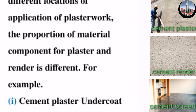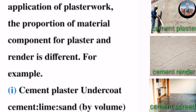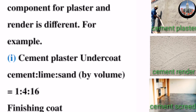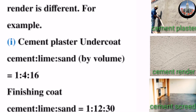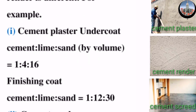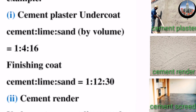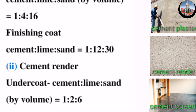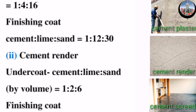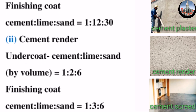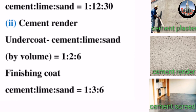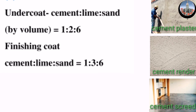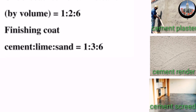For example: (1) Cement plaster — undercoat (cement:lime:sand by volume): 1:4:16 sand; finishing coat (cement:lime:sand): 1:2:30 sand. (2) Cement render — undercoat (cement:lime:sand by volume): 1:2:6 sand; finishing coat (cement:lime:sand): 1:3:6 sand.